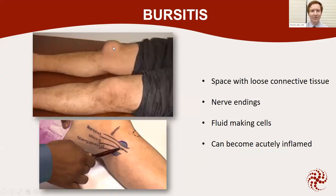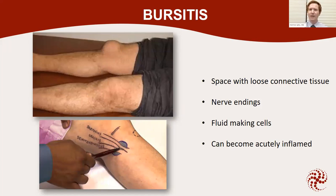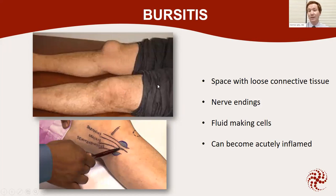Looking at bursitis — we have a big bursa over the front of the kneecap that allows the skin to glide over the kneecap as we flex and extend our knee repetitively throughout the day. It can get full of fluid from chronic inflammation. There's a similar bursa just right in front of the tibia on the inside — that's where the hamstrings attach. People think hamstrings all attach in the back, but they actually wrap around on the inside and attach on the front of the tibia. Those bursa tissues make fluid and can become acutely inflamed, requiring non-operative treatment measures.